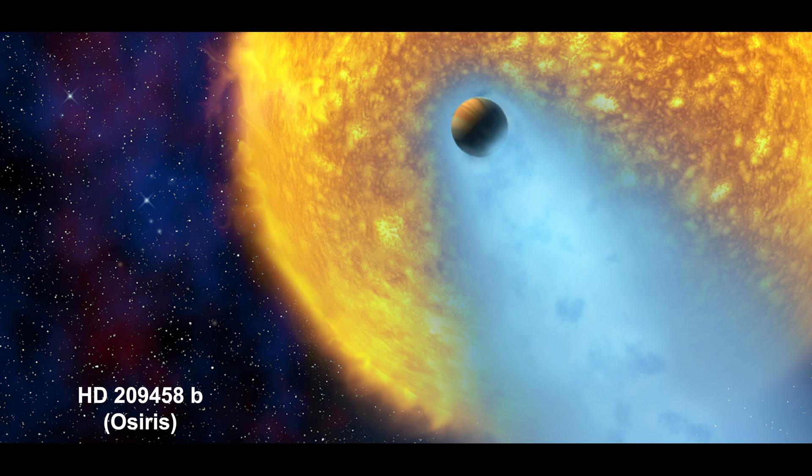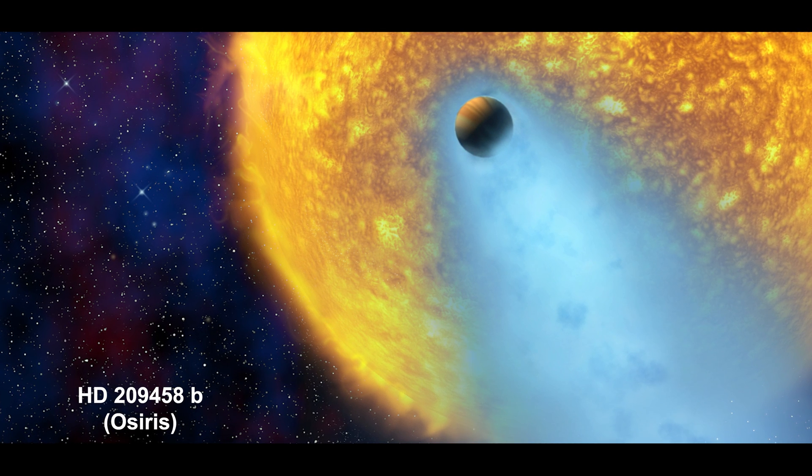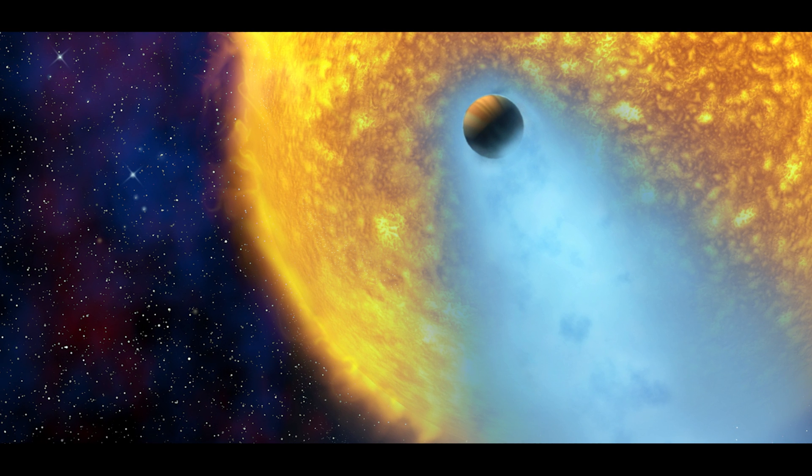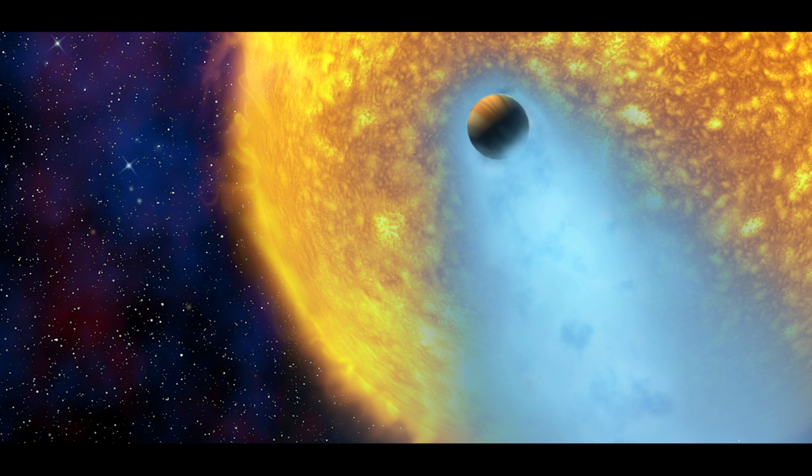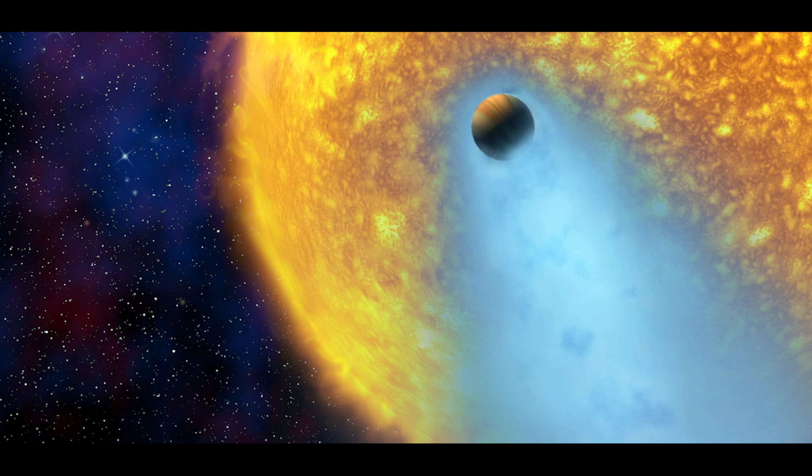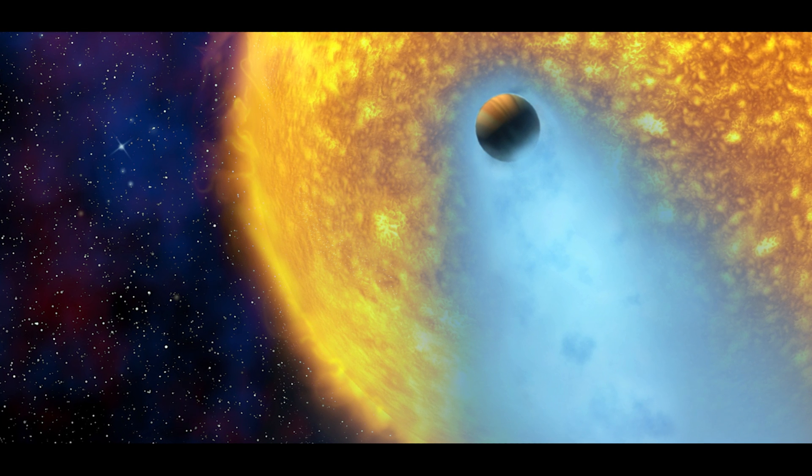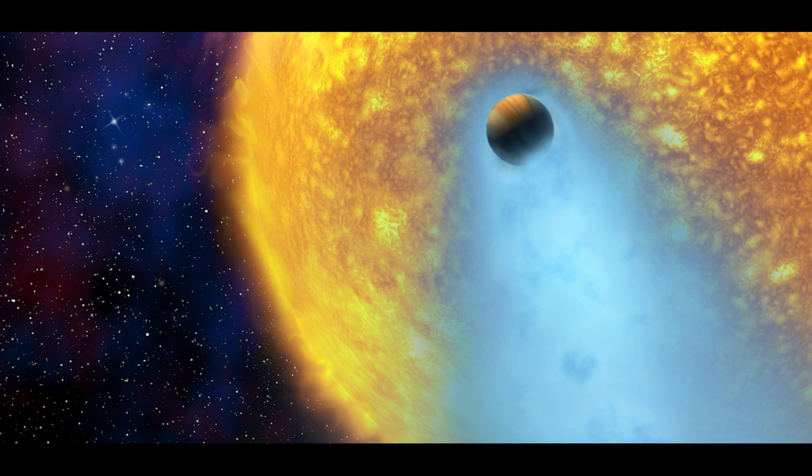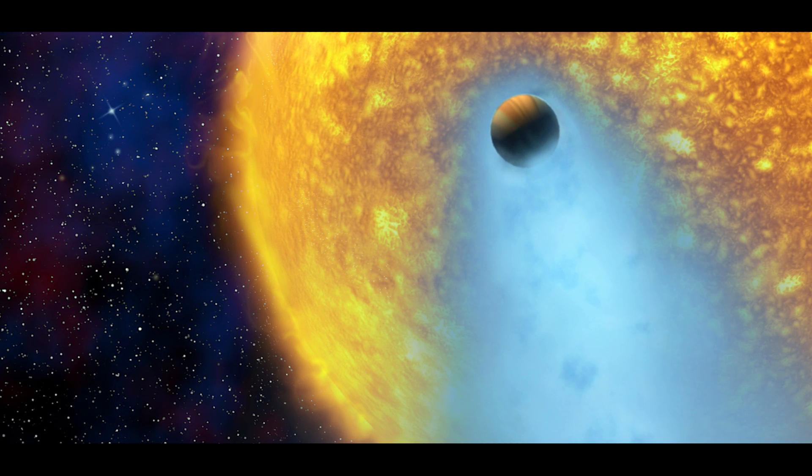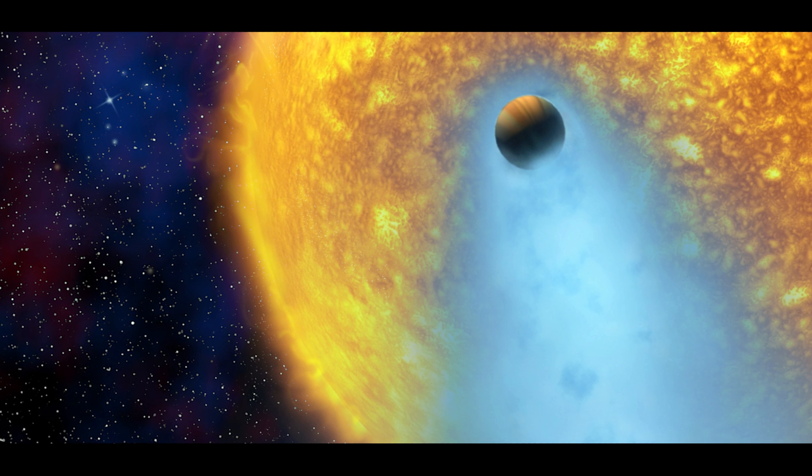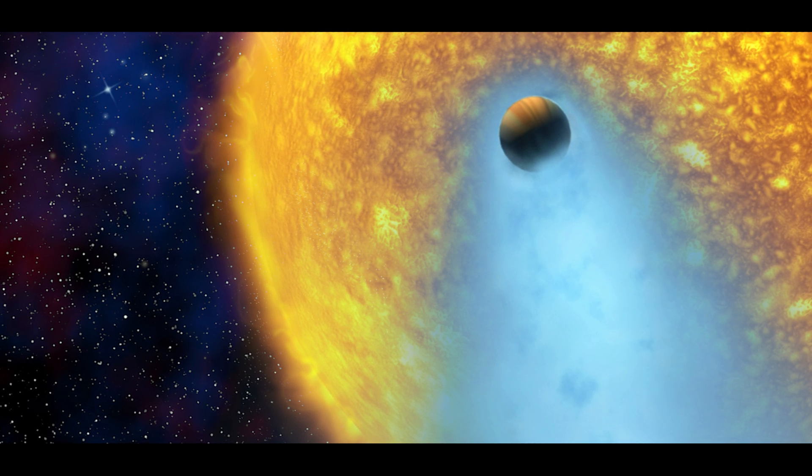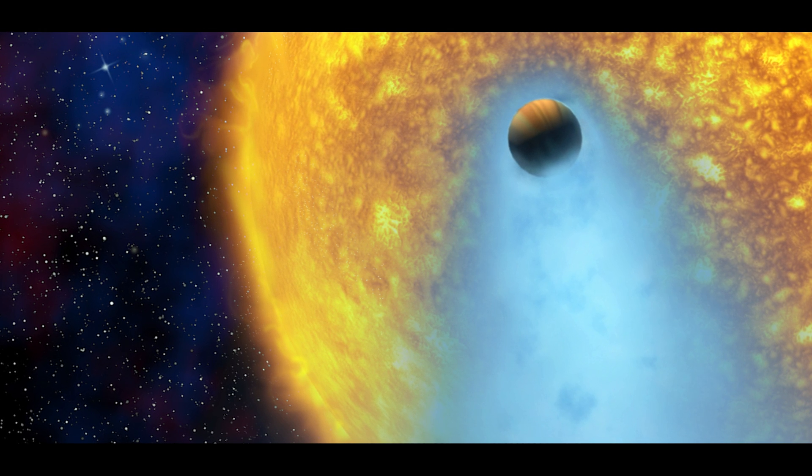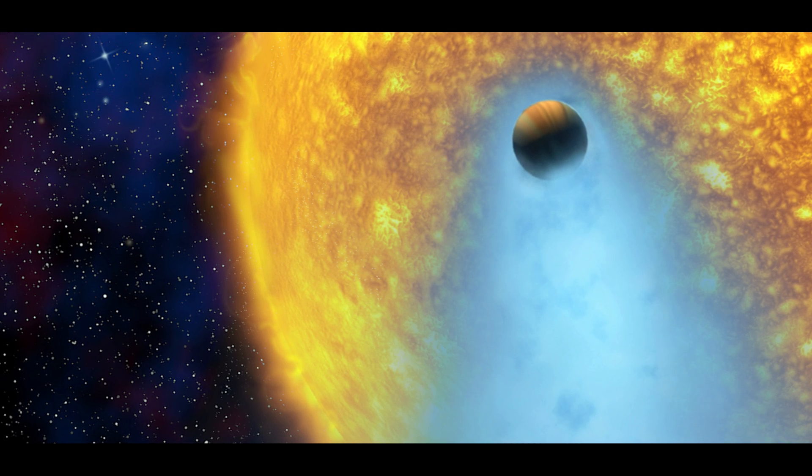HD 209458 b, Osiris. HD 209458 b is unofficially known by the name of the Egyptian god Osiris and lies 159 light-years from us. This planet has two-thirds of the mass of Jupiter, but is slightly bigger due to its proximity to the star and the therefore heated atmosphere. Since its distance to the star is only 6.92 million kilometers, the planet needs only 3.5 days for one orbit, which places Osiris in the class of hot Jupiters.